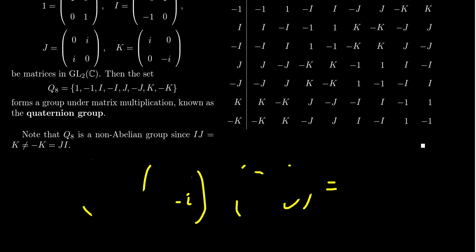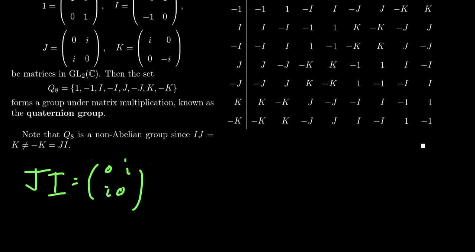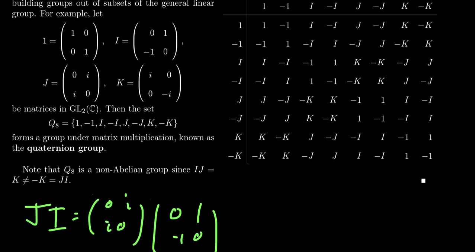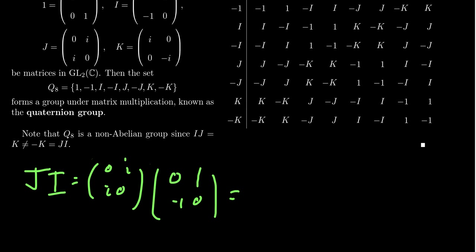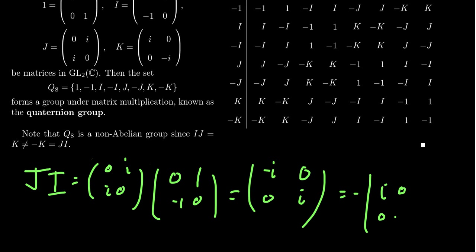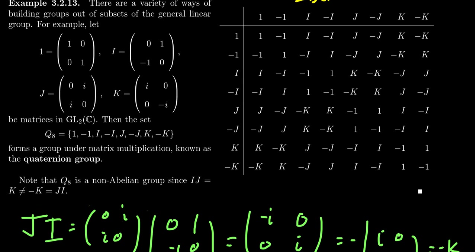Let's verify J times I explicitly. J = [0, i; i, 0] times I = [0, 1; -1, 0] gives [-i, 0; 0, i], which factoring out negative 1 is negative [i, 0; 0, -i] = negative K. So this is indeed a non-commutative operation — matrix multiplication usually doesn't commute. J times negative I is K. J times J is negative 1, and J times negative J is 1, so negative J is the inverse of J. And J times K gives I, while J times negative K gives negative I.